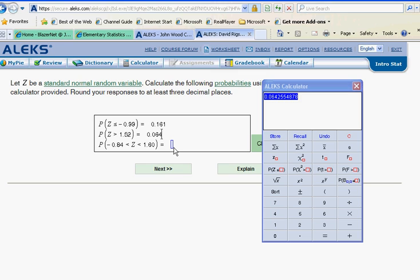Okay, and now we have one to do. This time, we want to read this a little differently. Now read this one, the area under the curve that is trapped between, when you have the two less than signs with the z between, pronounce that between, the area under the curve that is between negative 0.84 and positive 1.60.